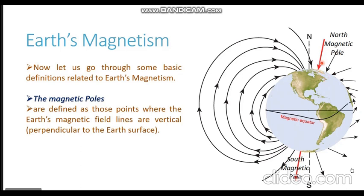At the south magnetic pole, the magnetic field line comes vertically out. At the north magnetic pole they go vertically in. The lines come out of the south magnetic pole because the earth's south magnetic pole has a red polarity, and magnetic field lines always come out of the red pole. At the north magnetic pole the lines go in because it has a blue polarity, and magnetic lines of force re-enter into the magnet at the blue end.